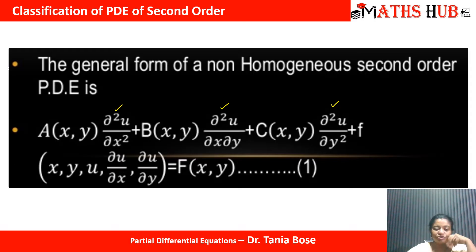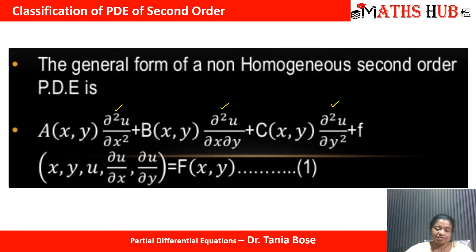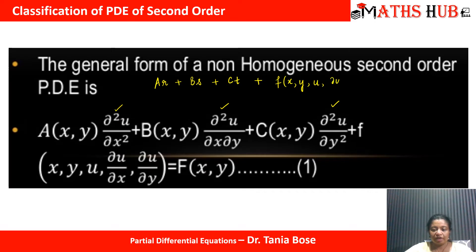This is the standard equation. The coefficient of ∂²u/∂x² is noted as a, the coefficient of ∂²u/∂x∂y is noted as b, and the coefficient of ∂²u/∂y² is noted as c. Sometimes this equation is also written as a·r + b·s + c·t, where the rest of the terms are written as a function of x, y, u, ∂u/∂x, and ∂u/∂y.